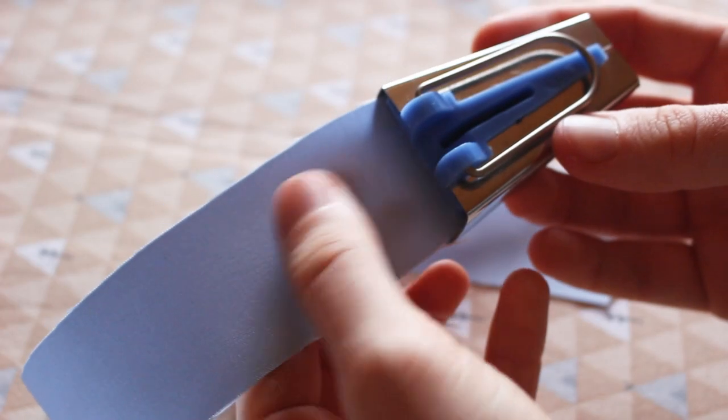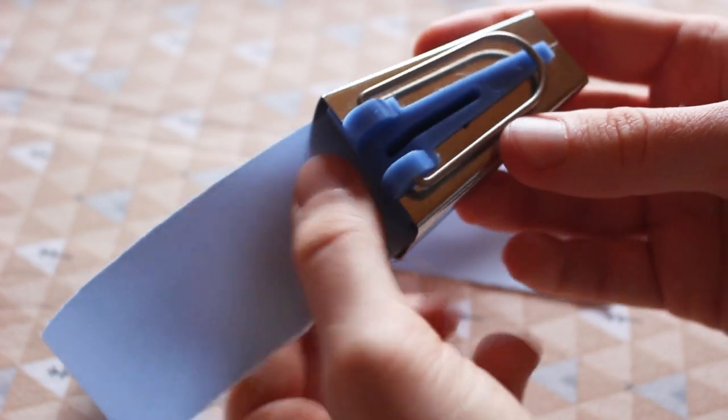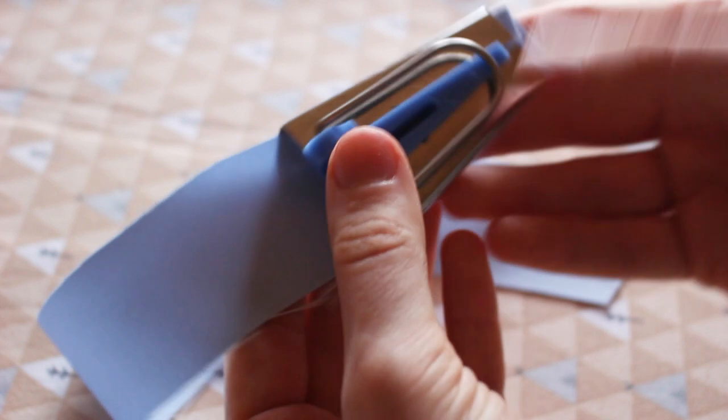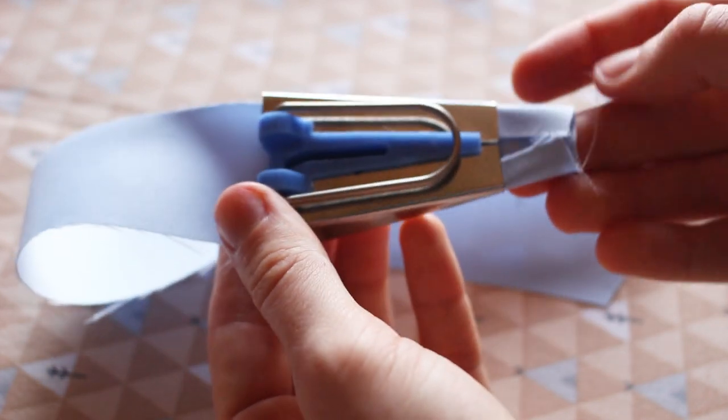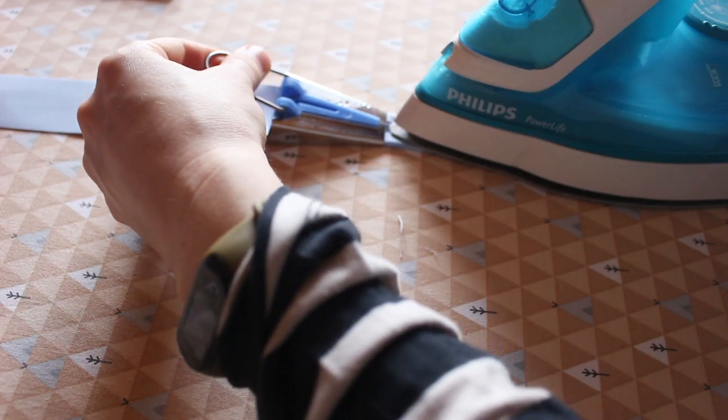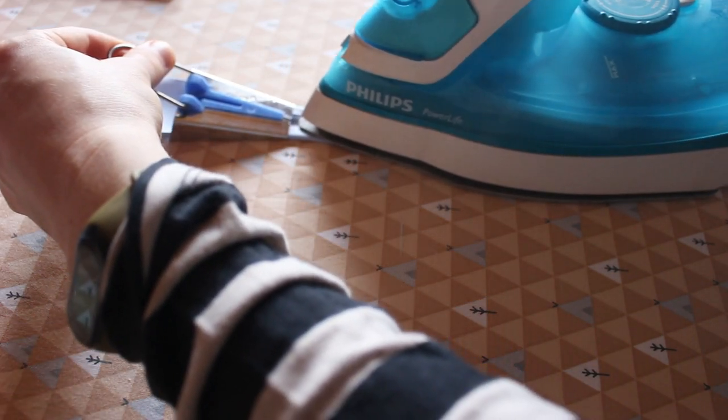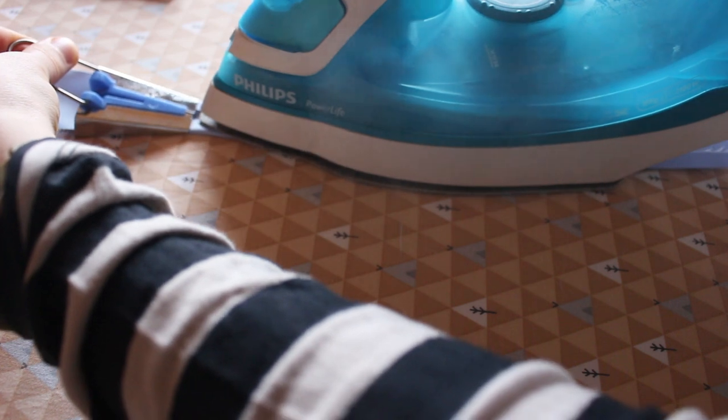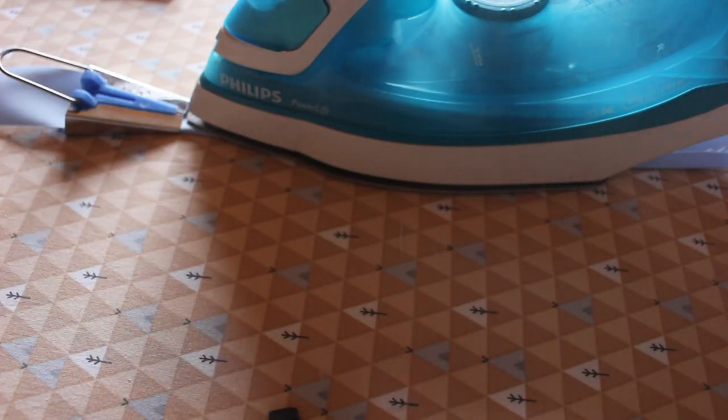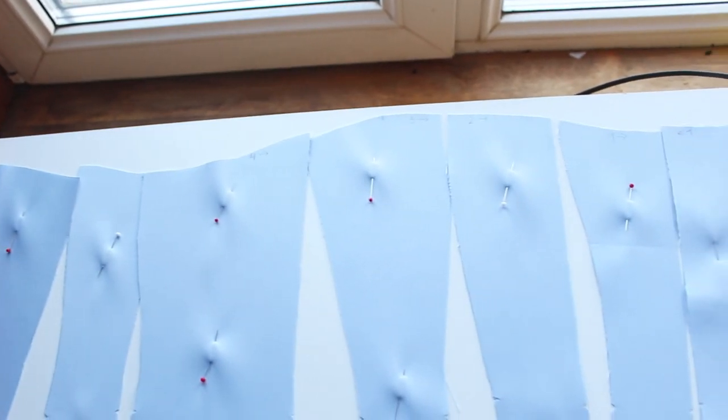Both edges of the fold should meet in the center. After 12 boning channels and 4 tapes for finishing the corset were done, I changed my bias tape maker to the one with 25mm finish size. Then I made 4 of the wider boning channels the same way.